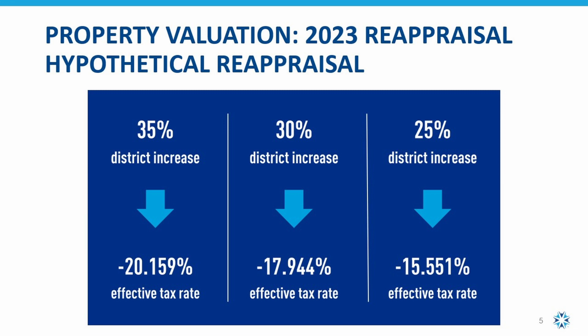The chart on your screen shows three different hypothetical reappraisal results in Olentangy Schools. You can see that if the reappraisal of the district is at 35 percent, we anticipate that the effective tax rate measured in mills will decrease by a little over 20 percent. If the district has a 30 percent increase in value, we anticipate that the effective tax rate, again measured in mills, will fall by about 18 percent. Finally, if the district has a 25 percent increase in value, we expect the effective tax rates, once again measured in mills, to drop by about 15 and a half percent.